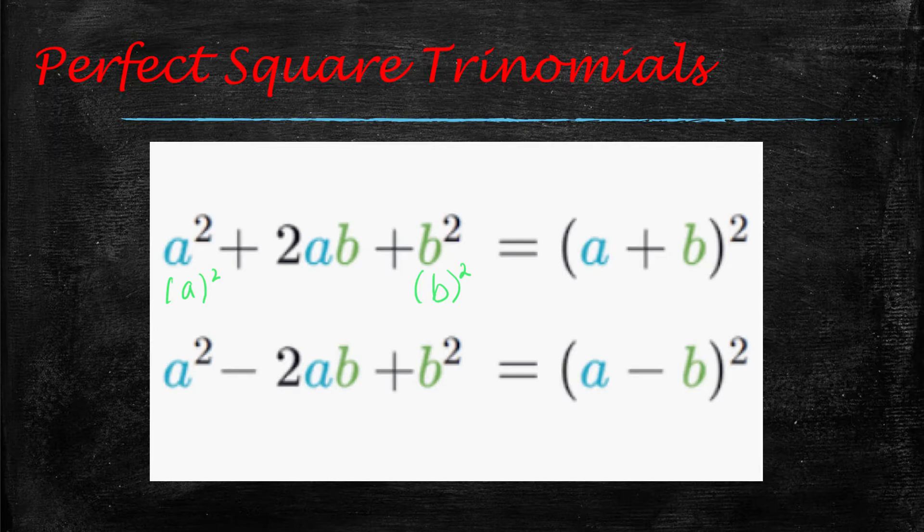And so when that happens, if you have a plus in the middle, then your factors are going to be a plus b times a plus b, but we can write that as a plus b quantity squared. If you have a minus in the middle, then it would be an a minus b quantity squared.